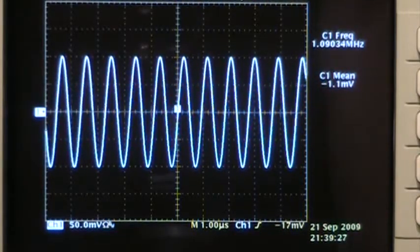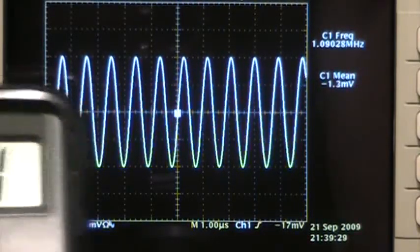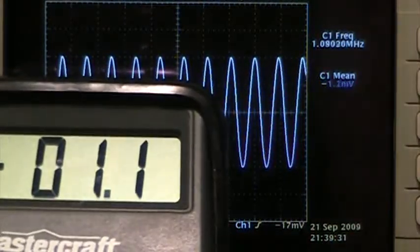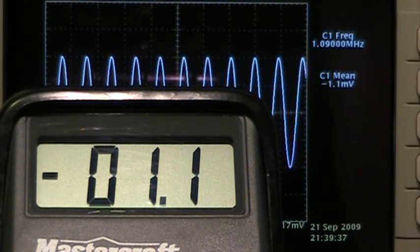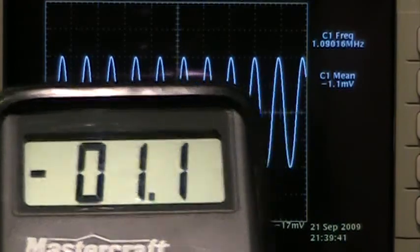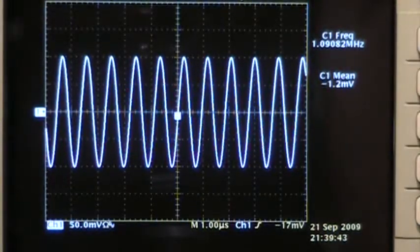Now I've also got the Mastercraft meter connected again and I'll just slide it into view here for you and show you what it's indicating. About minus 1.1, so we're probably looking at about a hundred microvolt difference between the two, which is very acceptable in my opinion.